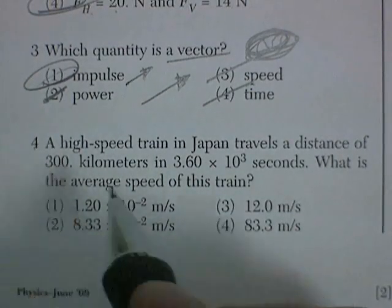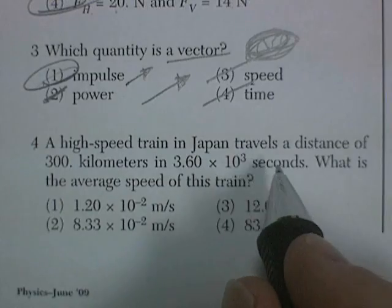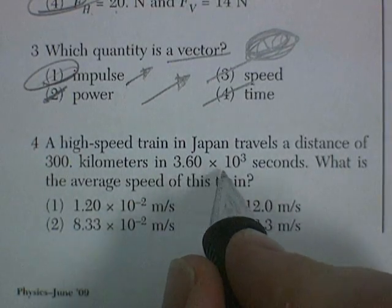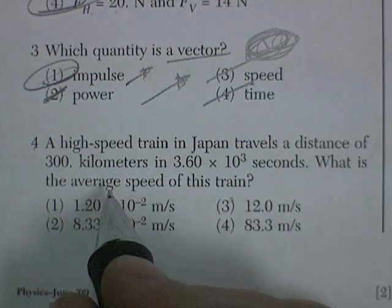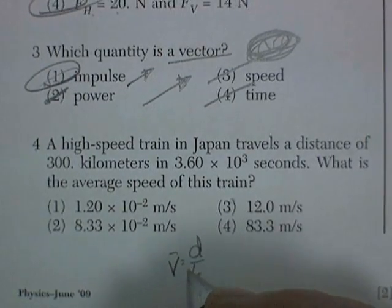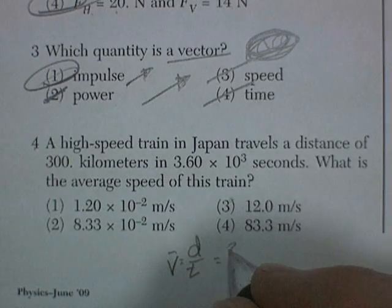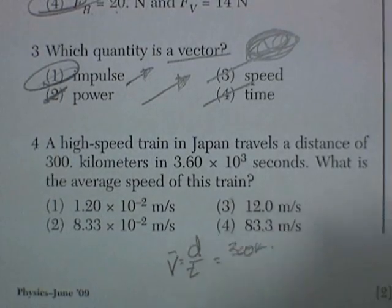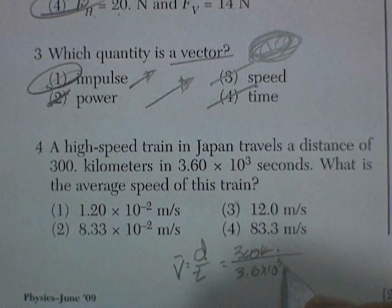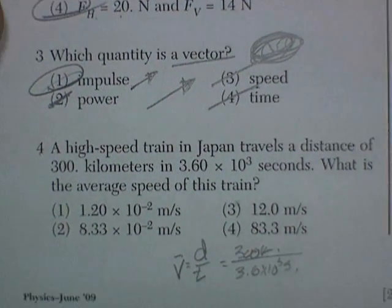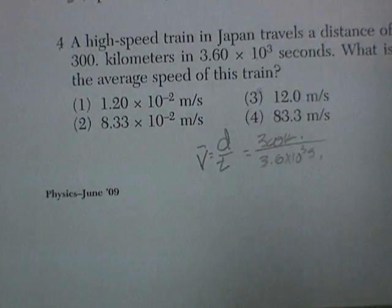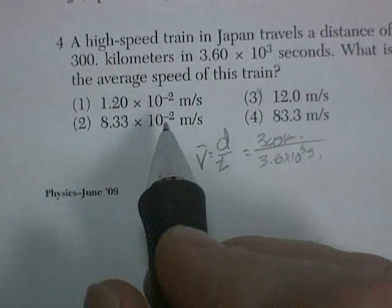And right here for question four, a high-speed train in Japan travels a distance of 300 kilometers in 3.6 times 10 to the 3 seconds. What's the average speed of the train? Well, it's average speed is going to be distance over time. And so we plug in the numbers. 300 kilometers divided by 3.6 times 10 to the 3 seconds. Get out the calculator. And when I reach for my calculator, I realize something. My answers here are in meters per second.